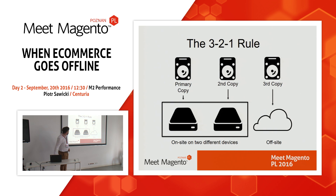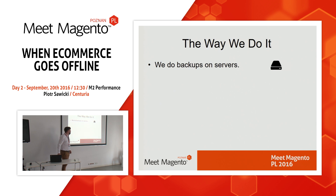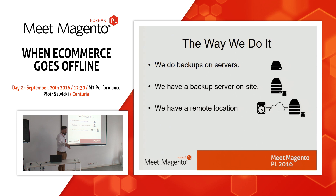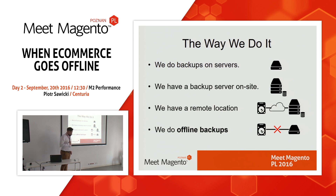I'd like to tell you a little about how we do backups at Centuria. We do backups on our servers — there are also disks in the server that we back up to. We also have a backup server on-site and download copies to it. We have a remote location in another data center with a backup server there as well, so we have copies of our data in two different data centers. Last but not least — and this is what I'd like to tell you more about — are offline backups. It's a very simple thing that I think everyone can do, but not everyone thinks about it.